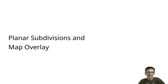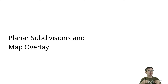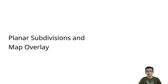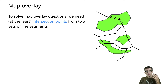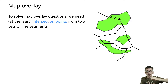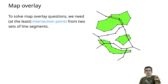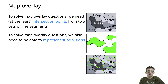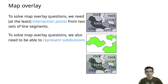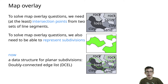Our motivation to study the line segment intersection problem was the problem of map overlay, so let's get back to that now. We're going to see a data structure to store planar subdivisions, because that's essentially the map layers we're dealing with. To solve the map overlay problem, if I want to combine two layers consisting of regions bounded by line segments, I have to find the intersections between those line segments. That problem we've solved. The key problem we still need to look at is how do we actually represent subdivisions, and we're going to see a data structure for that.